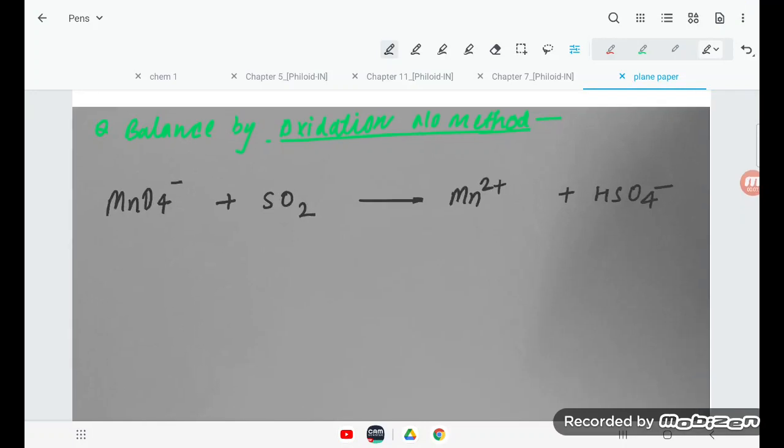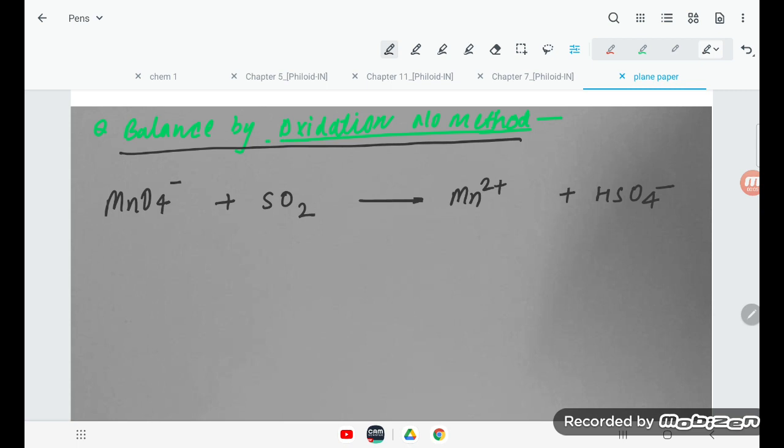Hello students, let's see this NCERT problem - balance by oxidation number method. MnO4^- ion is reacting with SO2, and it is oxidizing into HSO4^- and Mn^2+. So let's find the oxidation numbers.